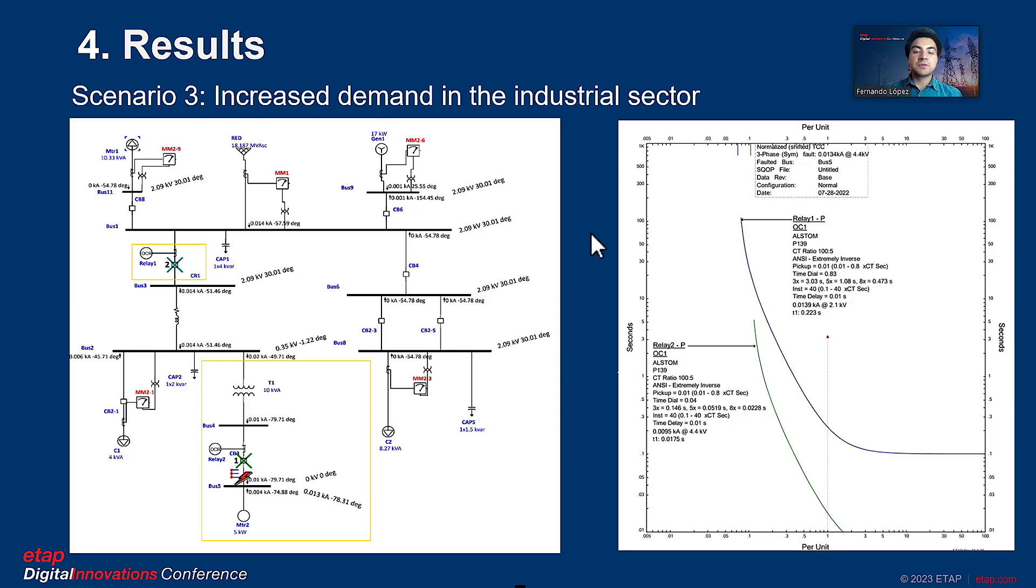For this purpose, two Alstom P139 overcurrent relays were used on circuit breakers CB1 and CB3. In addition, in the curve graph, it can be seen that relay two acts first and then relay one, as well as the characteristic of each.